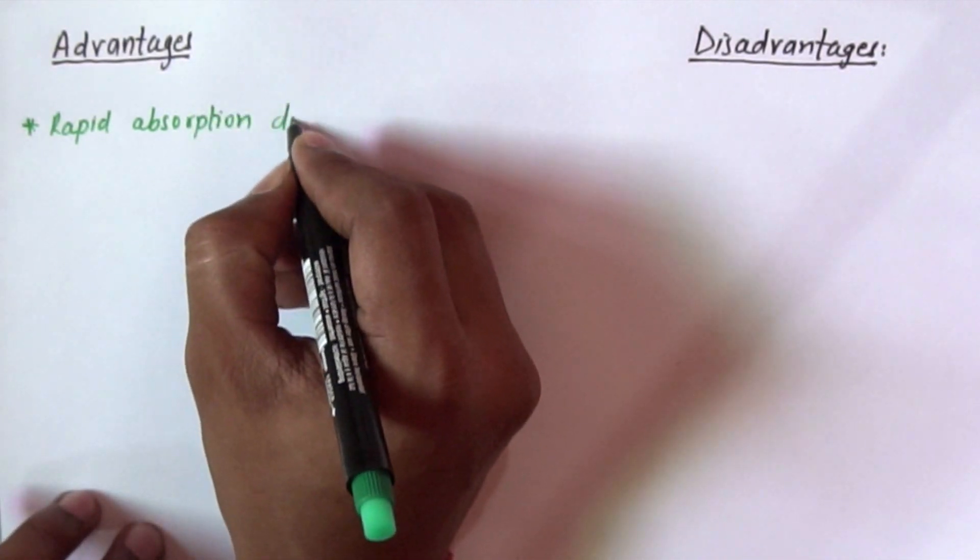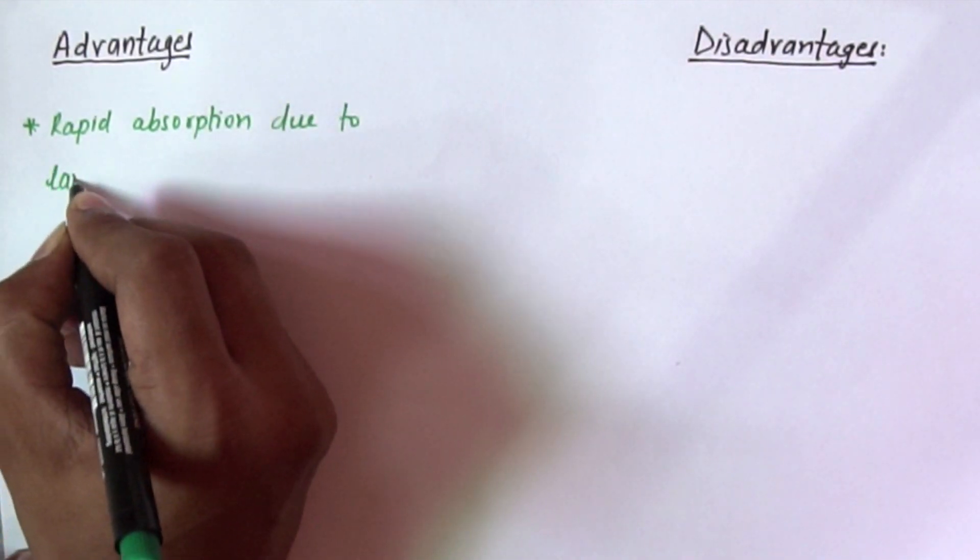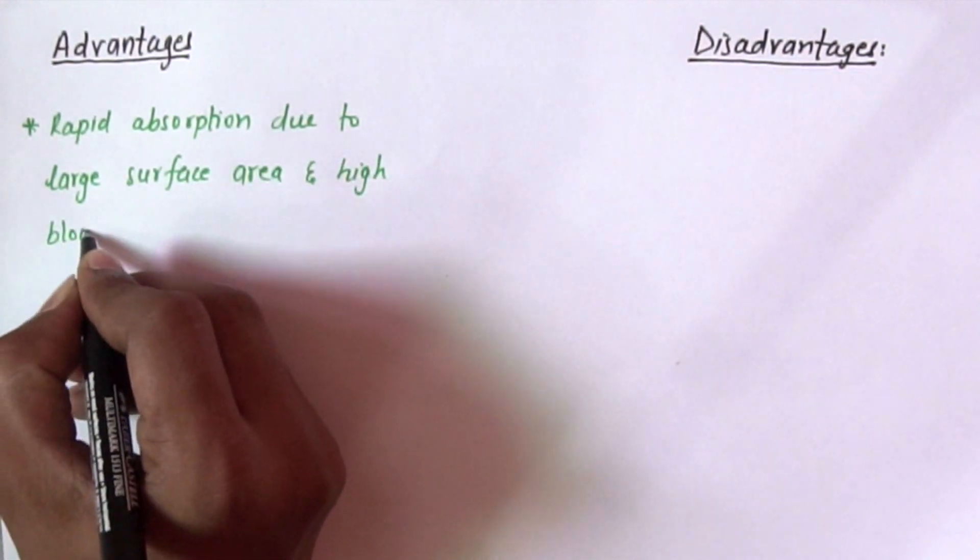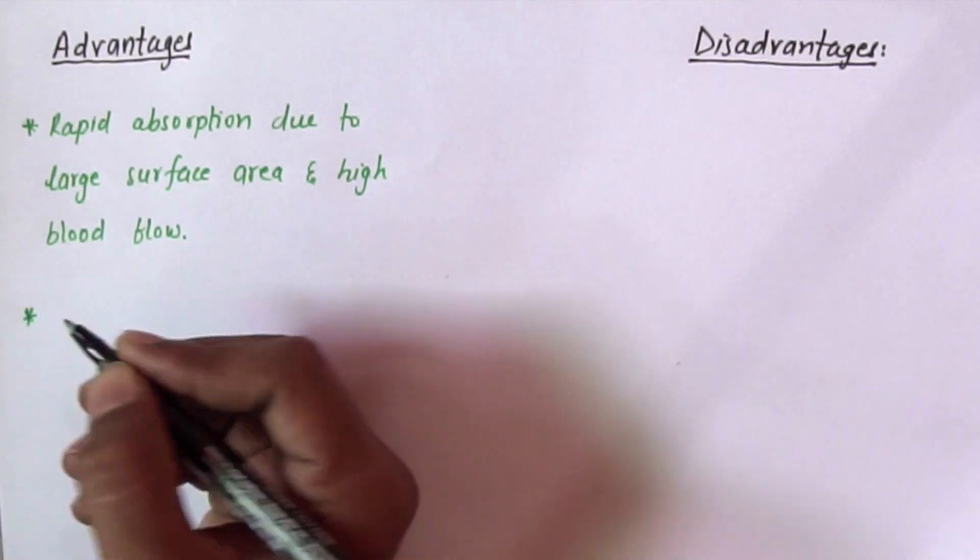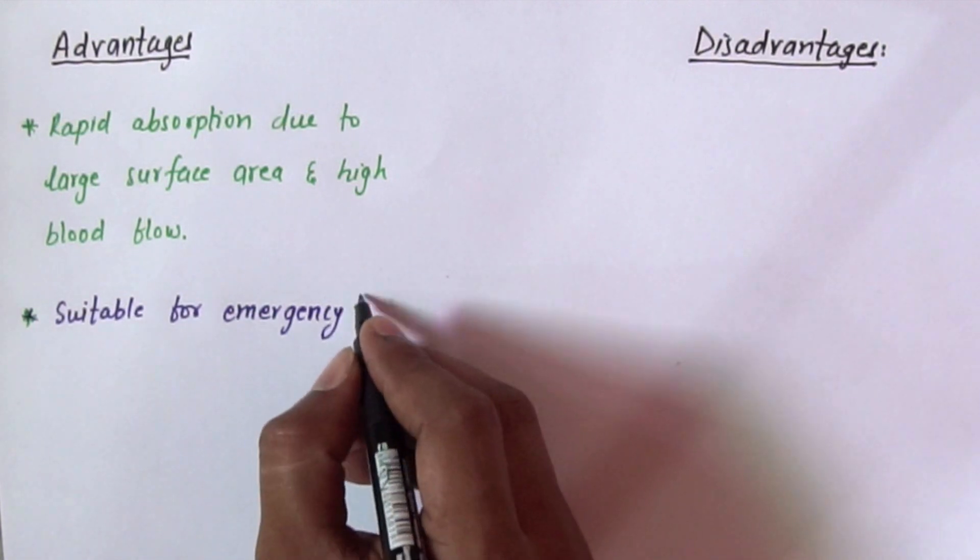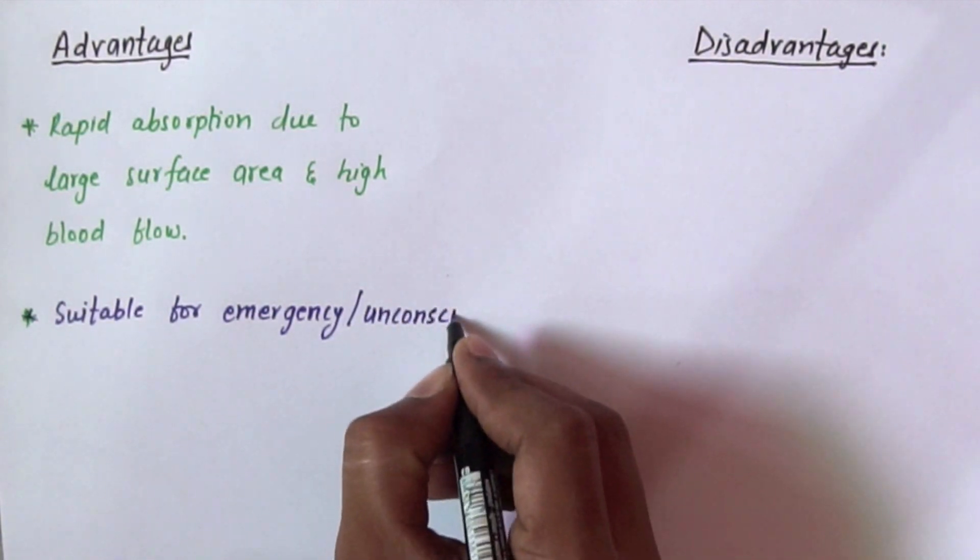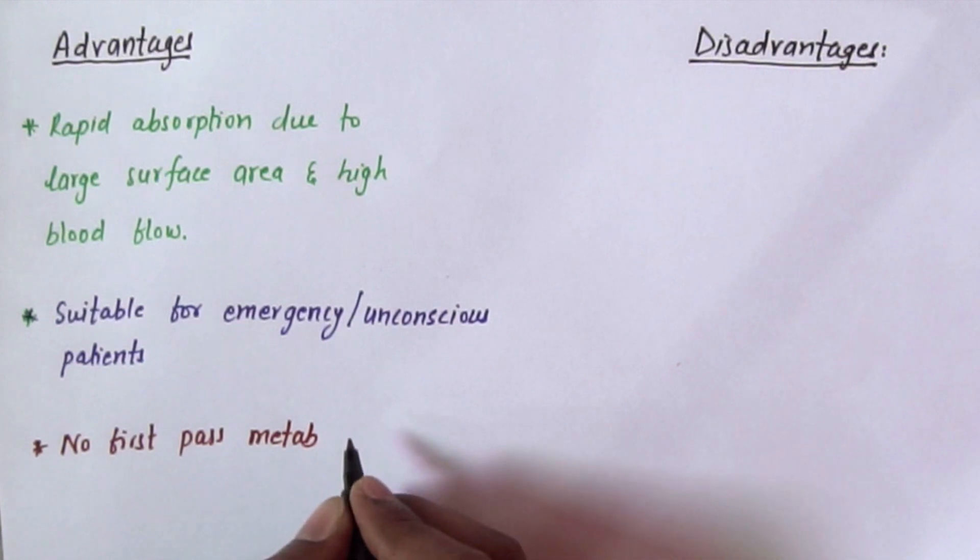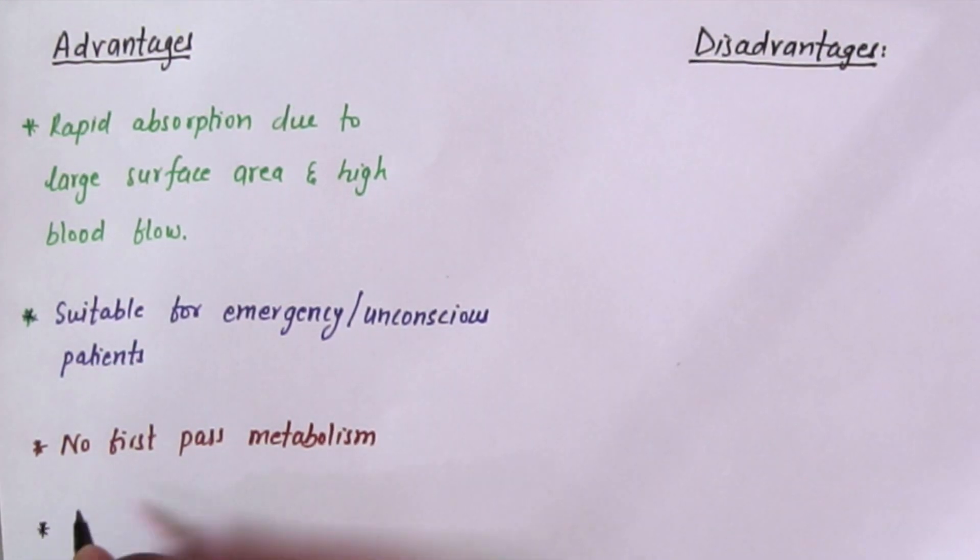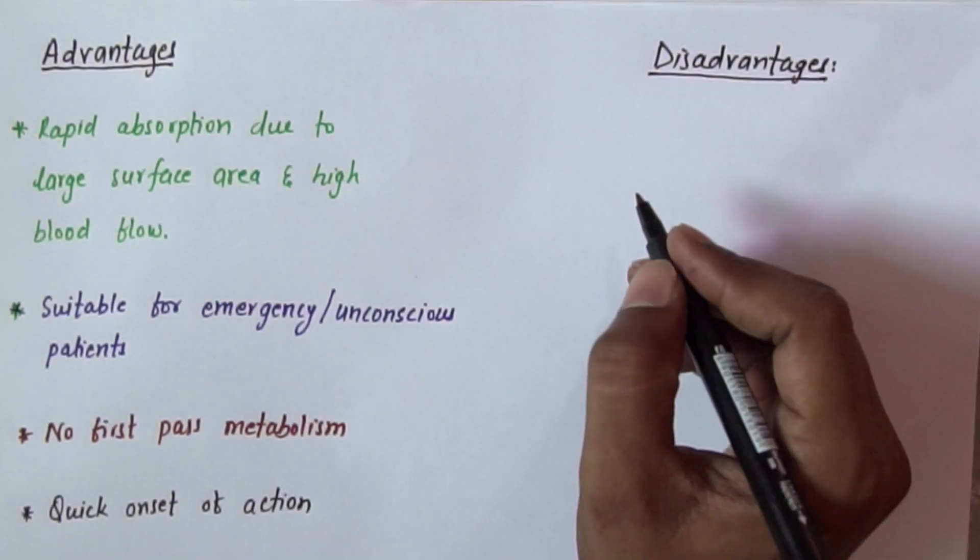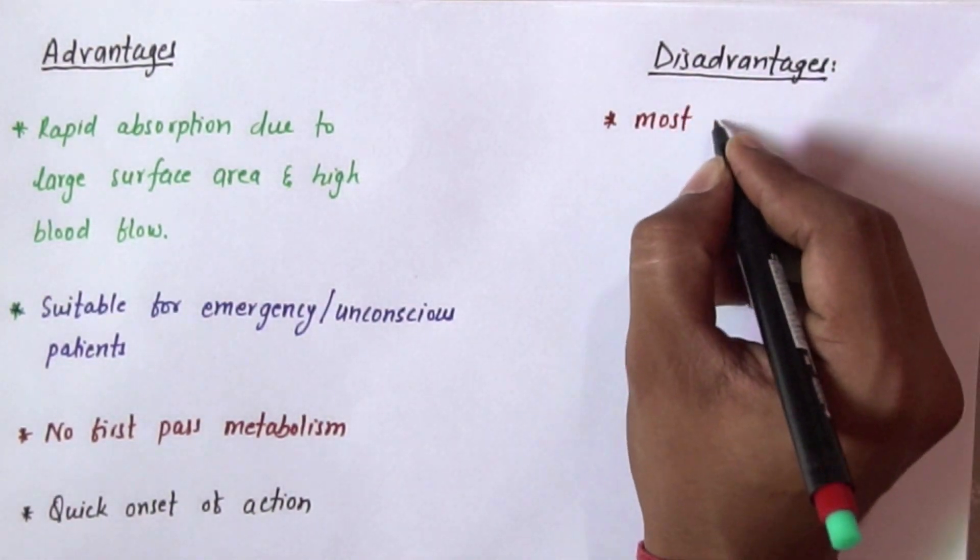Now we will discuss about advantage and disadvantage. So there will be rapid absorption due to large surface area and high blood flow in the lungs. Then it is suitable for emergency or unconscious patients. Then there will be no first-pass metabolism as drug is not going through liver. There will be quick onset of action, hence response will be very fast.